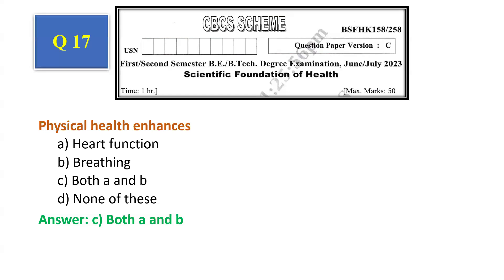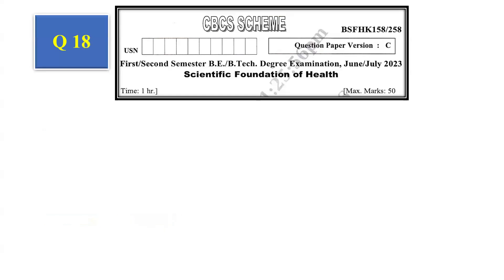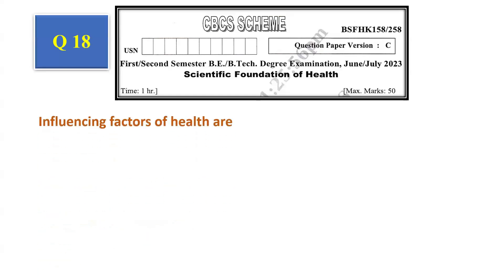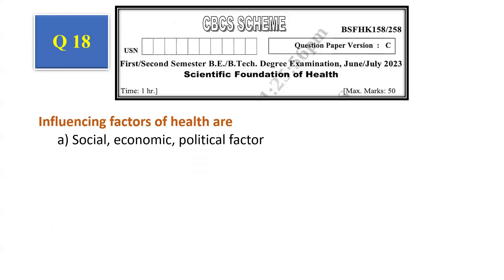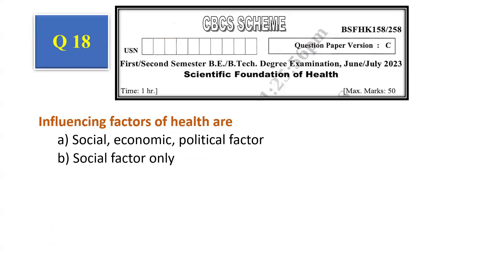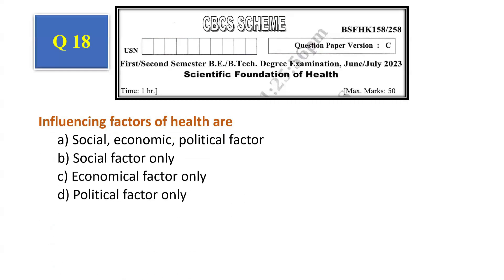Question number 17: The answer for this question is both A and B, that is option C. Question number 18: Influencing factors of health are — social, economic, political factor; social factor only; economical factor only; political factor only. The answer is social, economic, and political factor, that is option A.